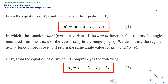In this equation, the function atan2(y, x) is a variant of the arctan function that returns the angle measured from the x-axis of the vector (x, y) in the range (-pi, pi). We cannot use the regular arctan function because it will return the same angle value for (x, y) and (-x, -y). Next, from the equation of Pz we can compute D3 as shown in equation 5.